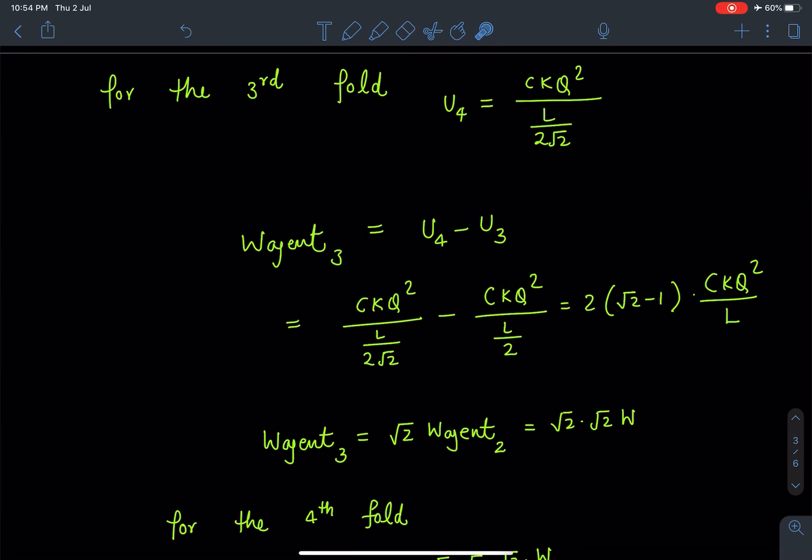So for the third fold we can write this simply: this work done is going to be W_agent3, which is going to be U4 minus U3. So again we are going to substitute these values. Now that length becomes L/(2√2) after one more fold. So U4 minus U3 on simplification is going to give us √2 times W_agent2